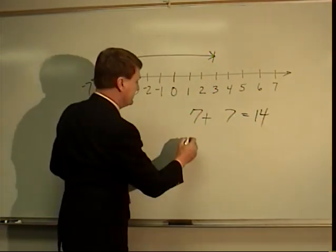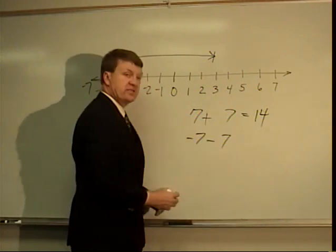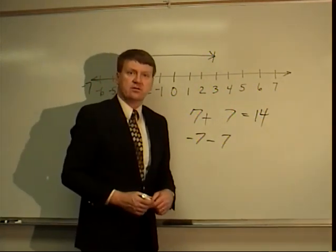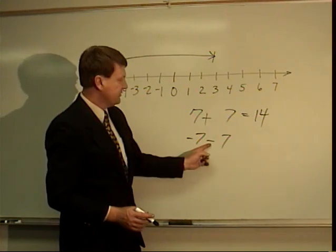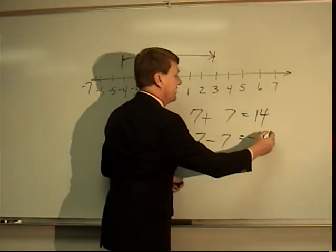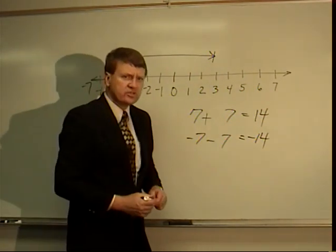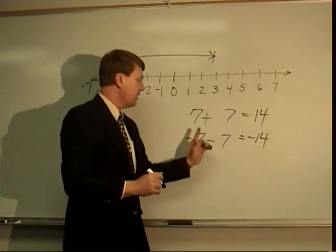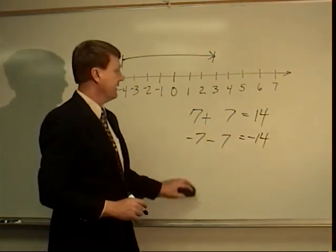Another one that's commonly missed is this. Negative 7 minus 7. Switch them around. That's not zero. You're starting at negative 7 and you're going back seven more. That means you're way in the hole. That's negative 14. We've got to keep those separate in our minds. It matters where you start, what operation you're doing, and whether you're going left or right.